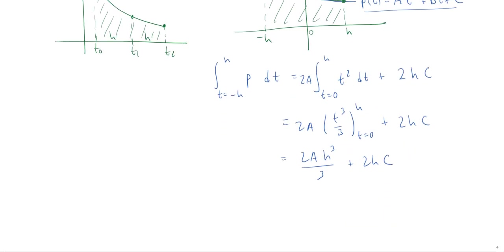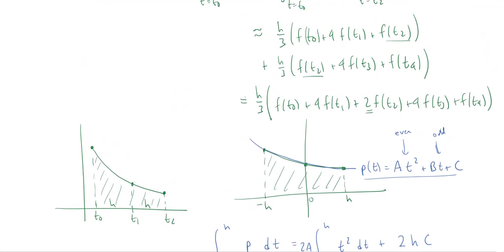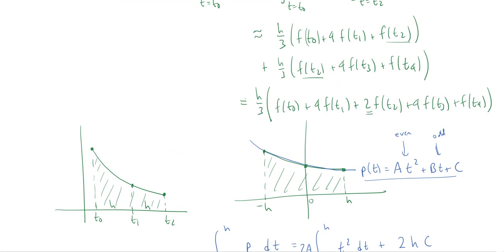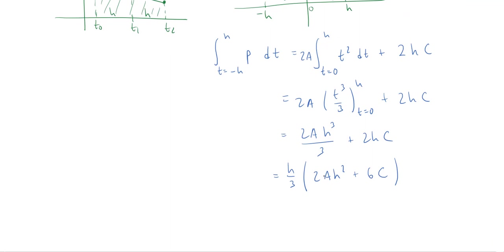Putting it together, the integral of p from -h to h equals 2ah³/3 + 2hc. Factoring out h/3, this becomes h/3 · (2ah² + 6c). That h/3 factor looks familiar — it's exactly what keeps appearing in Simpson's Rule! But I still need to connect 2ah² + 6c to the sampled function values.